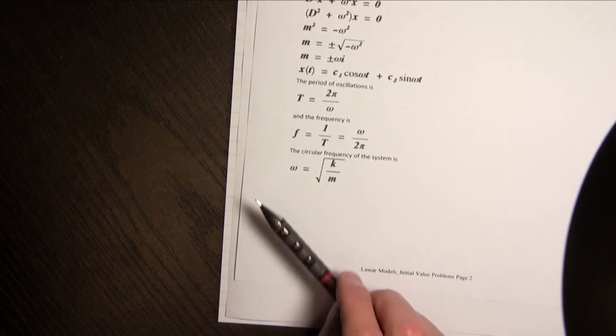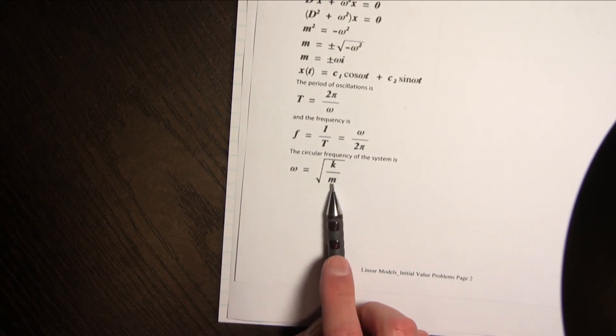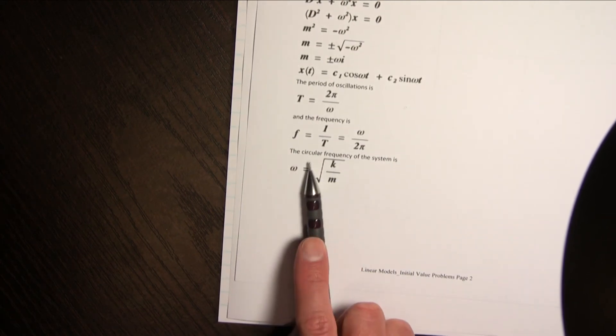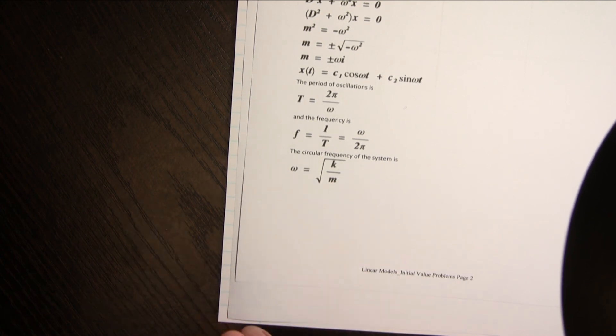And I just remind you that omega is then the square root of the spring constant divided by mass or it's also called the circular frequency of the system.